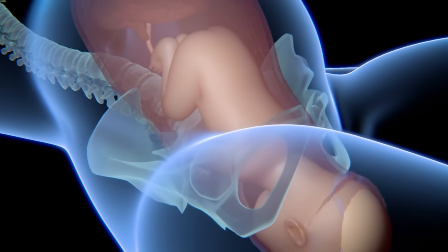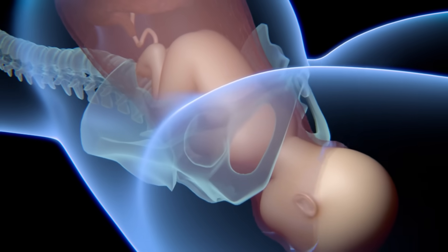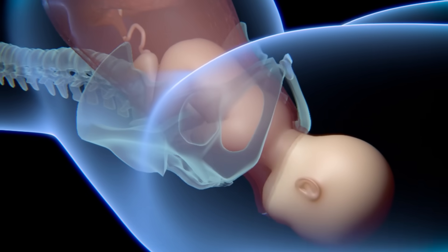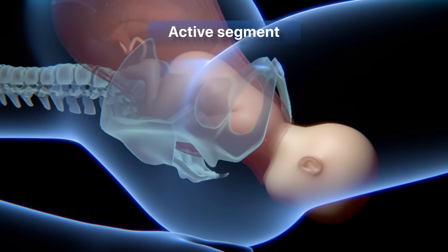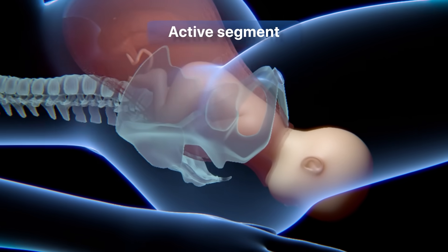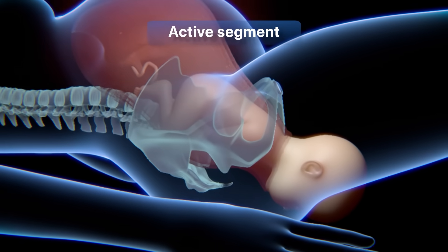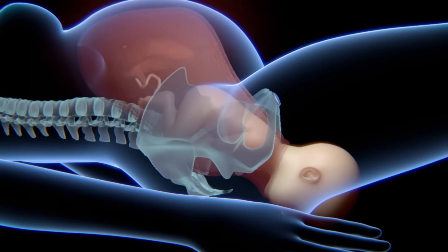In a normal delivery, the baby's head will turn and face the mother's back and during labor, the uterus will dilate, open up, which is when the uterus contracts to push the baby down, allowing it to pass more quickly through the birth canal.